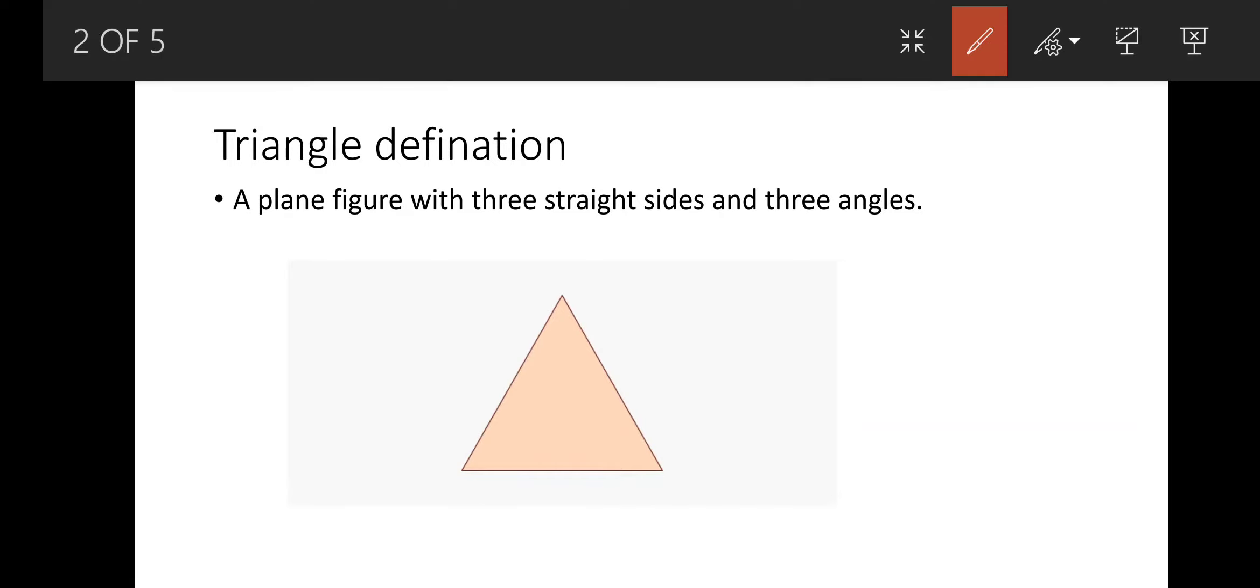So let's start today's topic with triangle definition. A plane figure with three straight sides and three angles is called a triangle.